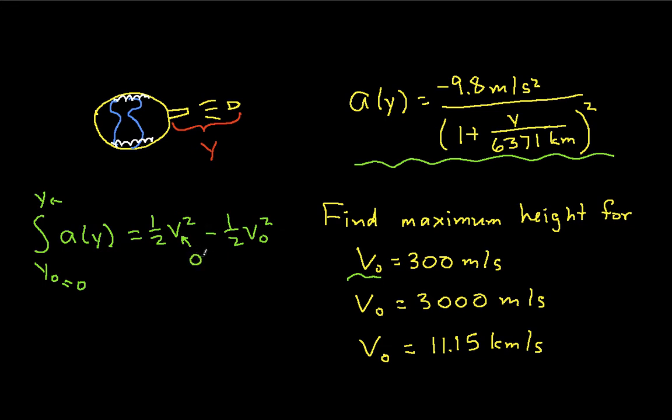So this will give us, then, a relationship. We know what V0 is, we know that this guy is 0, we know that this guy is 0. This will give us a relationship between V0 and y.